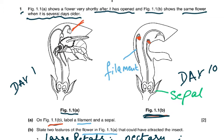That was the thing you had to note — then look at the stigma. The stigma in 1.1b is fine, it hasn't shriveled up. This is the stigma, the style, and the ovary. So: stigma, style, and this would be the ovary.